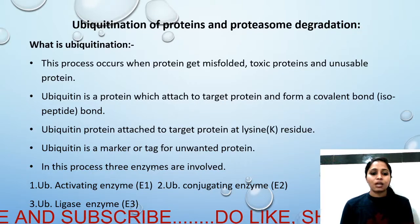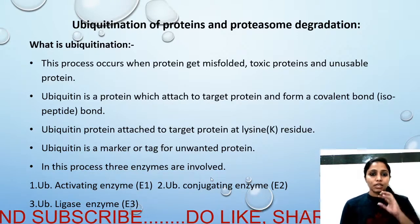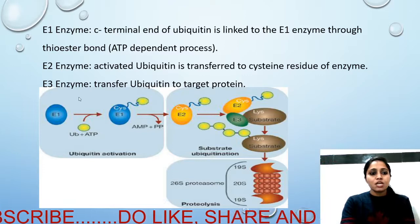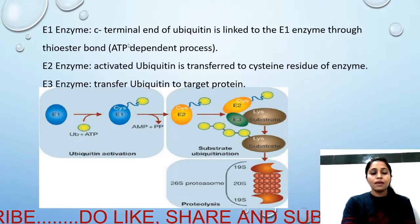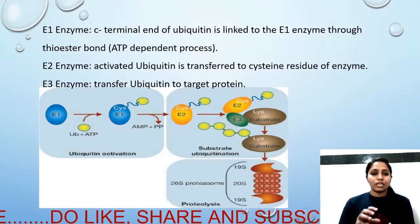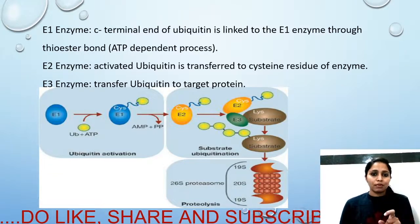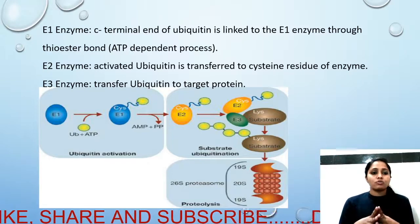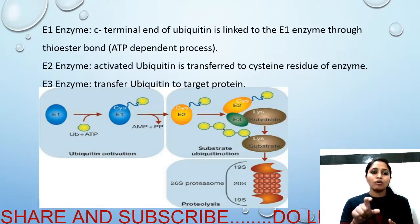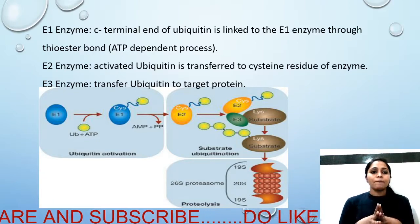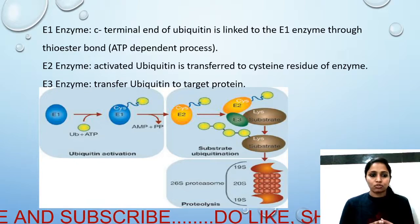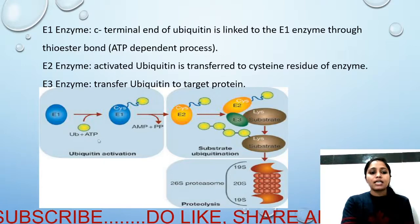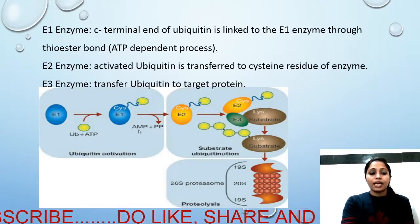These three enzymes play a very important role in ubiquitinating any protein. The main function of the E1 enzyme is to activate ubiquitin at its C-terminal end. The C-terminal end of ubiquitin is linked to the E1 enzyme via a covalent bond. This is an ATP-dependent process, meaning E1 performs ATP hydrolysis, converting ATP to AMP — adenosine monophosphate.